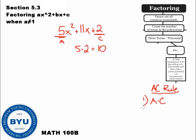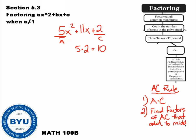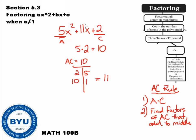The next step is to find factors of AC that add to the middle term. This looks just like normal three-term factoring from the last section, except we use the number AC, which equals 10. We write out the factors of 10: 2 and 5, 10 and 1. We want the factors that add up to the middle term, which is 11, so we use 10 and 1. That's step number 2.